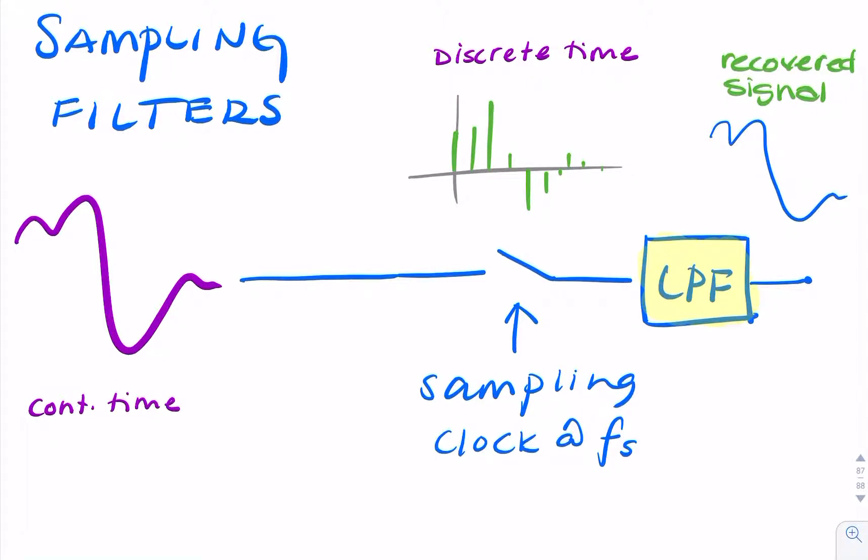and if the Nyquist criteria is obeyed, then the recovered signal should be identical to the original signal. Now, in some cases, if our original signal is not band-limited or if its bandwidth is higher than twice the sampling rate available,